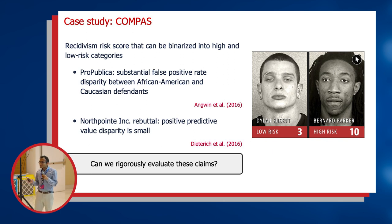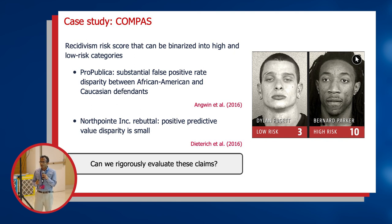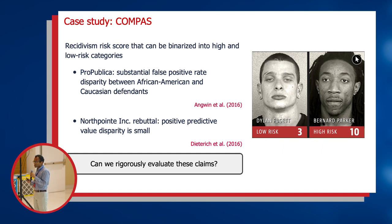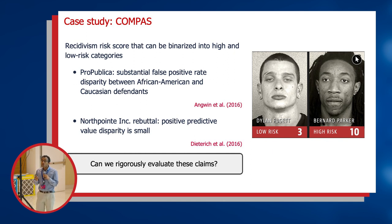An important piece of context for COMPAS is that at the same time, the creators of the COMPAS algorithm argued that the false positive rate wasn't quite the right metric to use. If you used a different metric of model accuracy, which they called positive predictive value, there was no disparity.